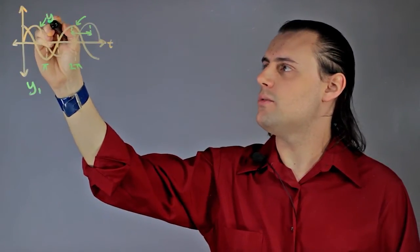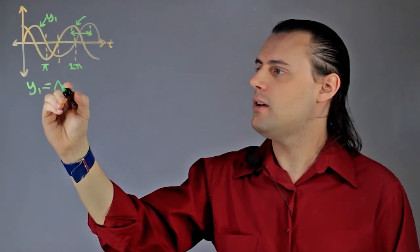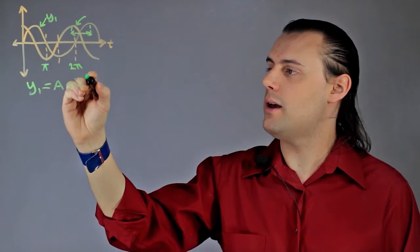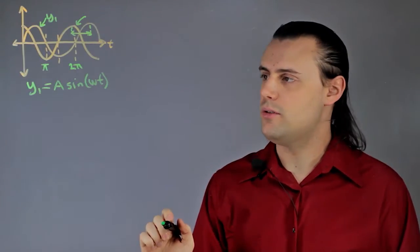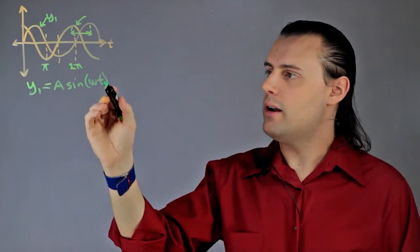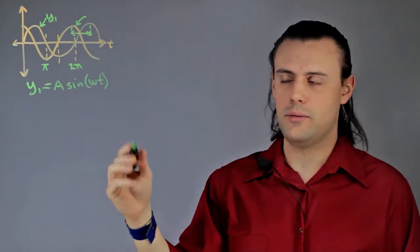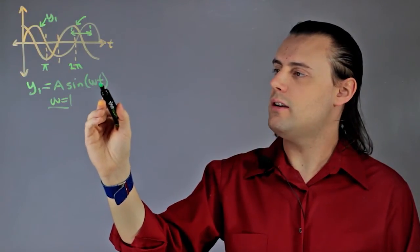Well, y1, which is my sine function, would simply be A times sine ωt. Here A is the amplitude, ω is the angular frequency, but here I'm assuming ω to simply be equal to 1, so I have sine in terms of just time.